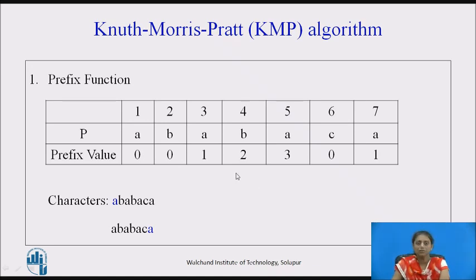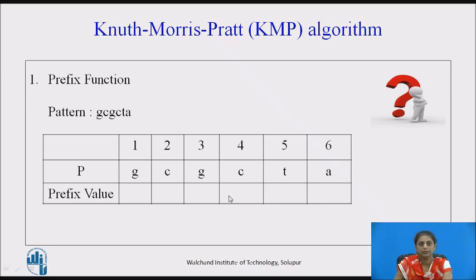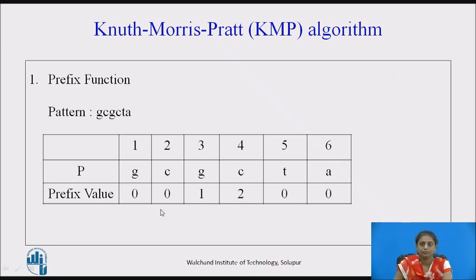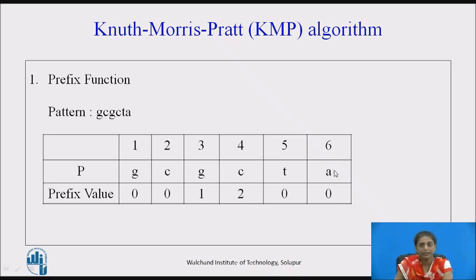In the KMP algorithm, the first step is to calculate the prefix value for every character of the pattern. For example, for pattern GCGCTA: G is 0, C is 0, the second G matches the prefix G so its value is 1, GC matches prefix GC so value is 2, T has no matching prefix character so value is 0, and A is also 0. Now this prefix table is used in finding the pattern.